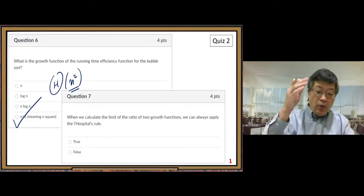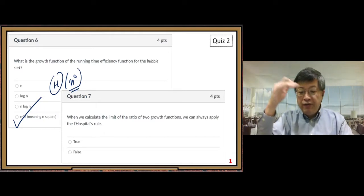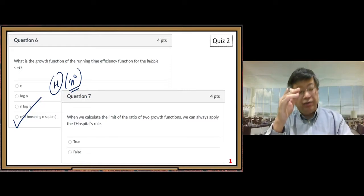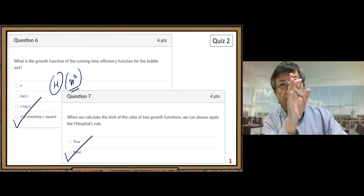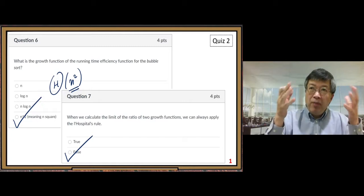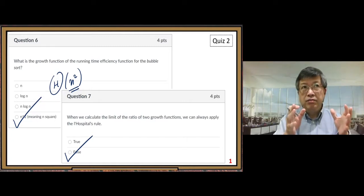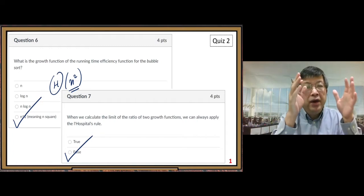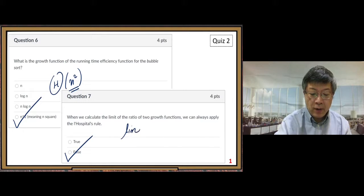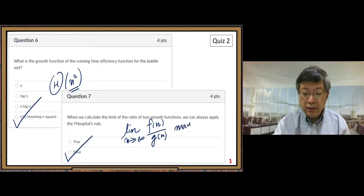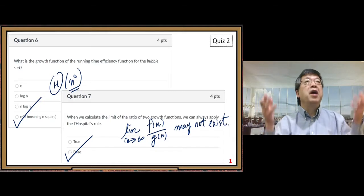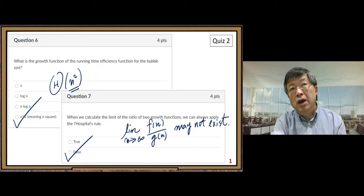Number 7. When we calculate the limit of the ratio of two growth functions, we can always apply L'Hôpital's rule. Answer: false. So if you recall the procedure, what we did to compare two growth functions, sometimes the limit may not exist. Remember this? So when you calculate the limit f of n over g of n, sometimes it may not exist. If it does not exist, how can you apply L'Hôpital's rule? You cannot apply L'Hôpital's rule.